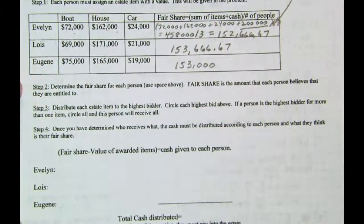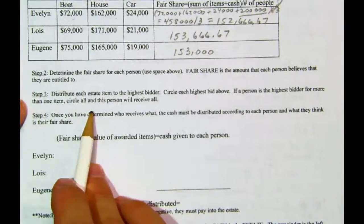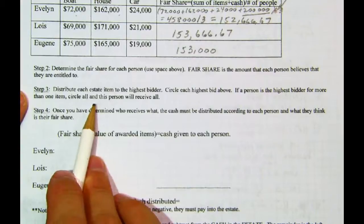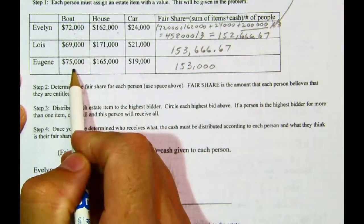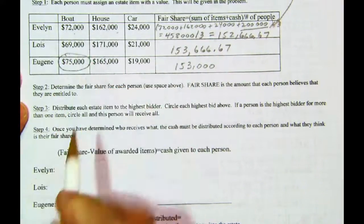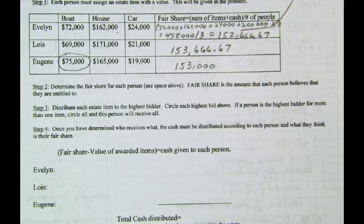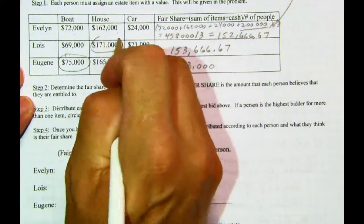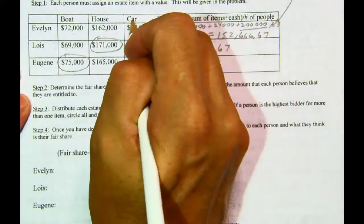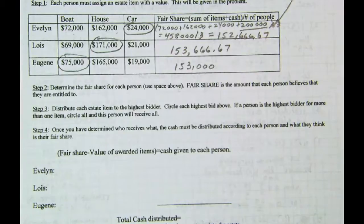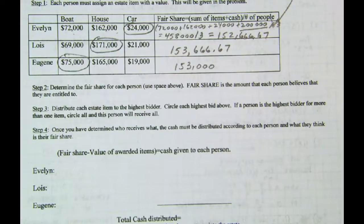The next step is to distribute each estate item to the highest bidder. Looking at the chart, who bid the highest for the boat? Eugene bid $75,000, so the boat goes to Eugene. For the house, Lois bid the most at $171,000. For the car, that goes to Evelyn. Each item goes to a different person — that doesn't always happen, but in this case people valued different items differently. So we circled the highest bidder for each item.